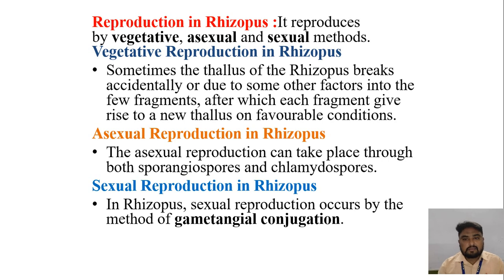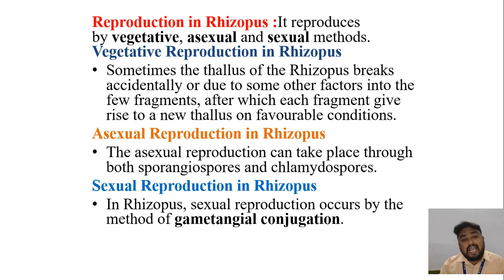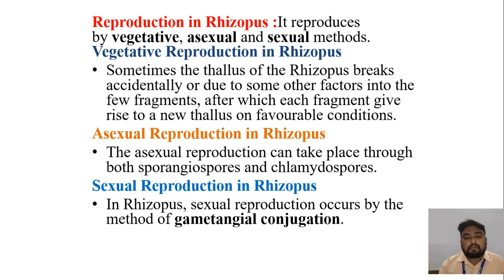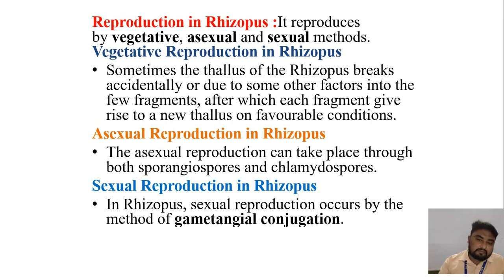The reproduction of Rhizopus occurs by vegetative, asexual and sexual methods. In vegetative reproduction, the thallus of Rhizopus breaks accidentally or due to some factors into a few fragments, after which each fragment gives rise to a new thallus under favorable conditions. Asexual reproduction takes place through both sporangiospores and chlamydospores. Sexual reproduction in Rhizopus occurs by heterothallic gametangial conjugation.